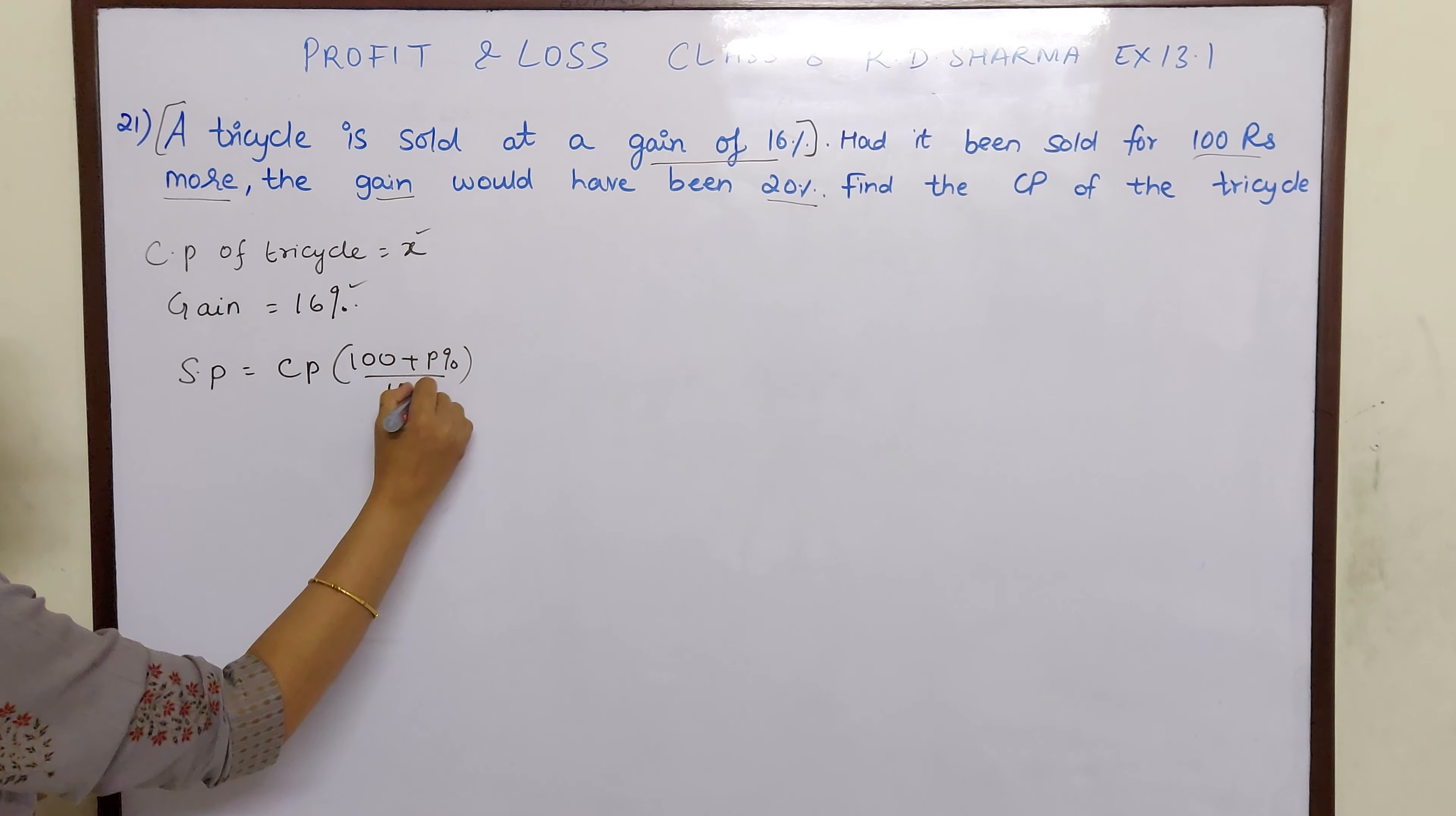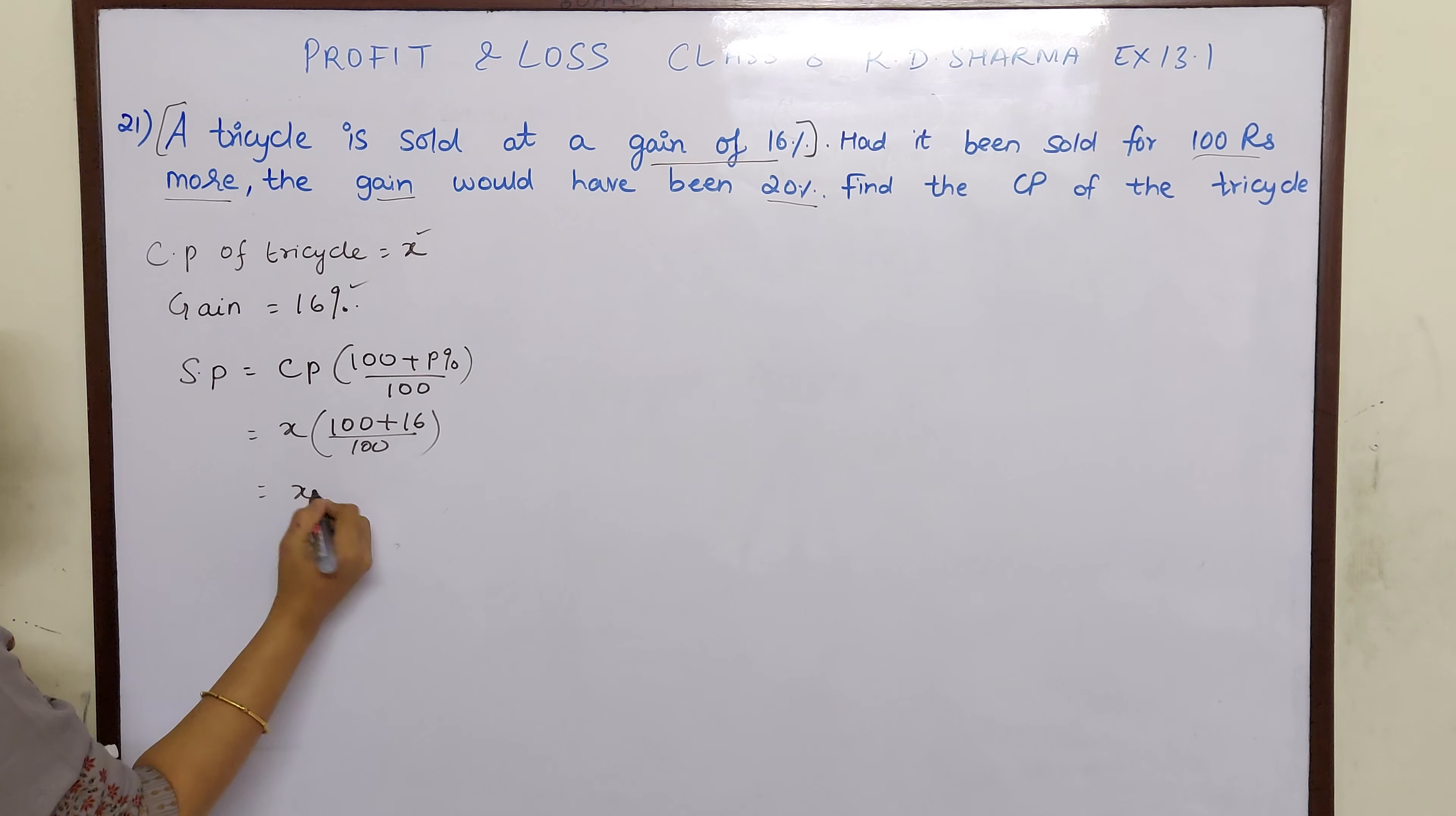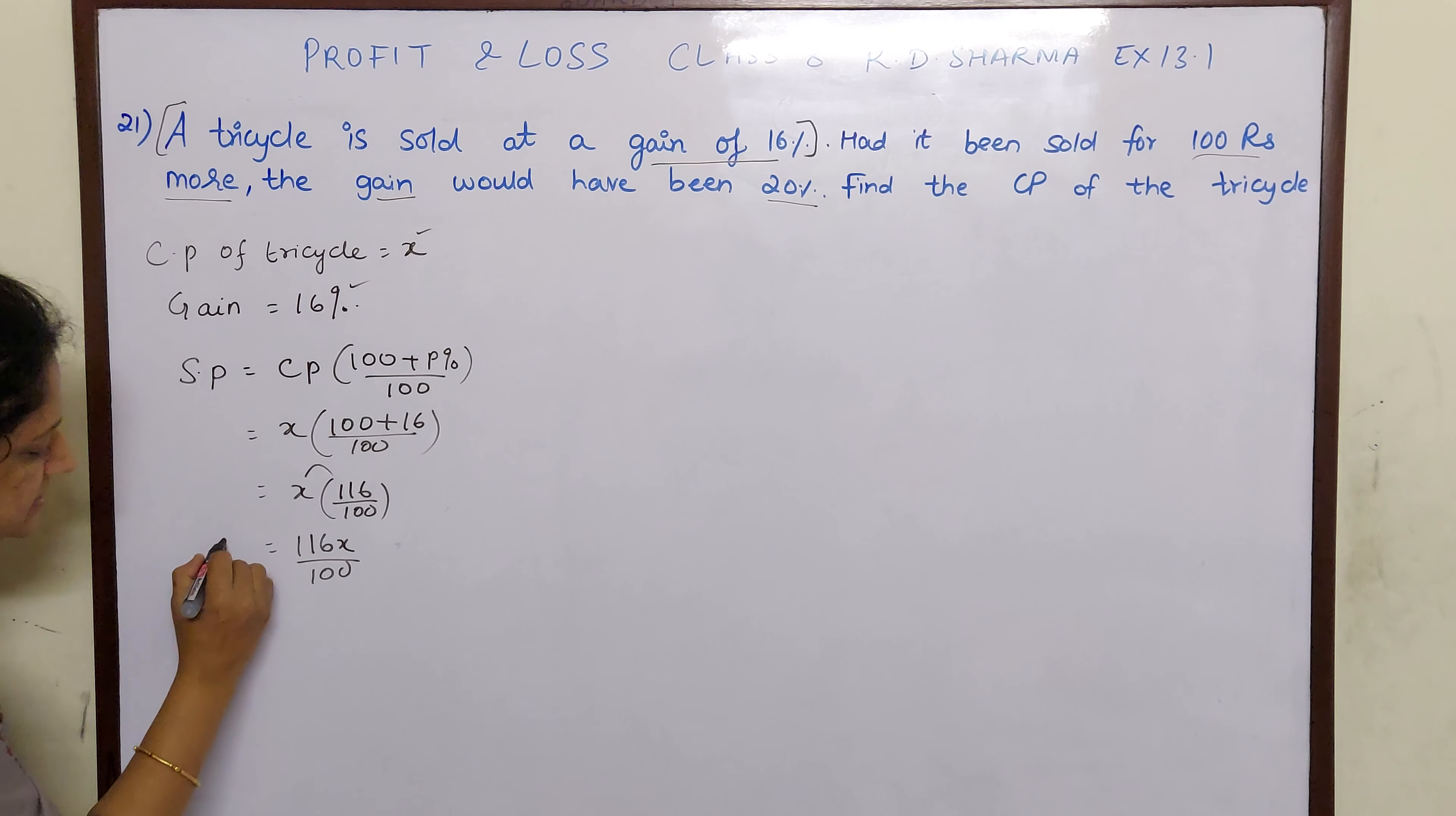Because gain and profit is same children. So CP times 100 plus what is profit percentage? 16 by 100. So it is equal to X into 116 by 100, which is 116X by 100. So this is the meaning of the first sentence. So our selling price is 116X by 100.